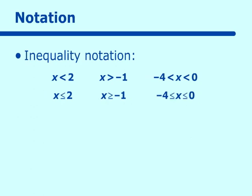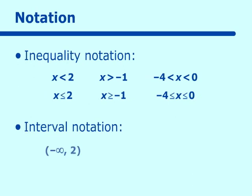Now let's change that to something we more commonly use in this class. The inequality x is less than 2 is written as parentheses, negative infinity, comma, 2, close parentheses. This is read x is less than 2. The next one, parentheses, negative 1, comma, infinity, is read x is greater than negative 1. And the interval between negative 4 and 0 is written as negative 4, comma, 0.